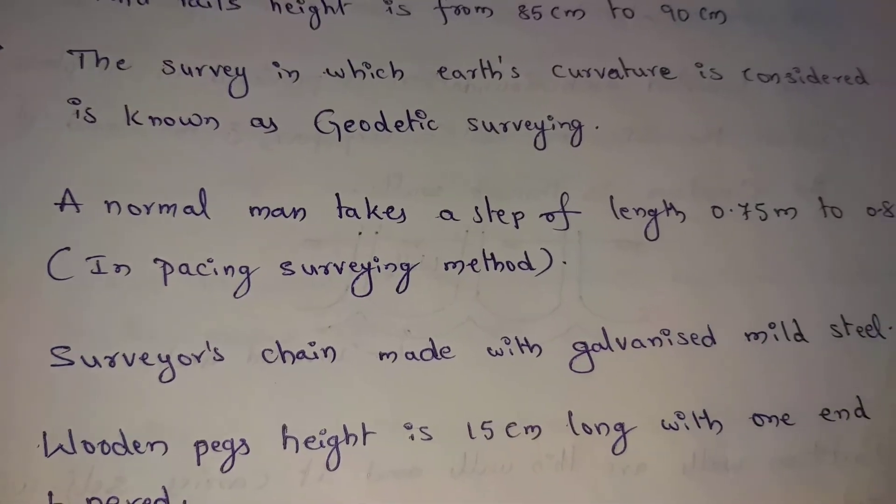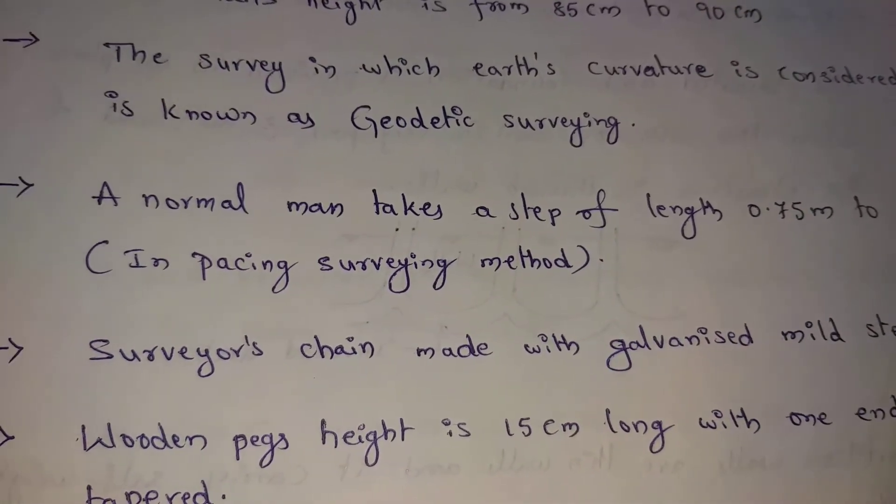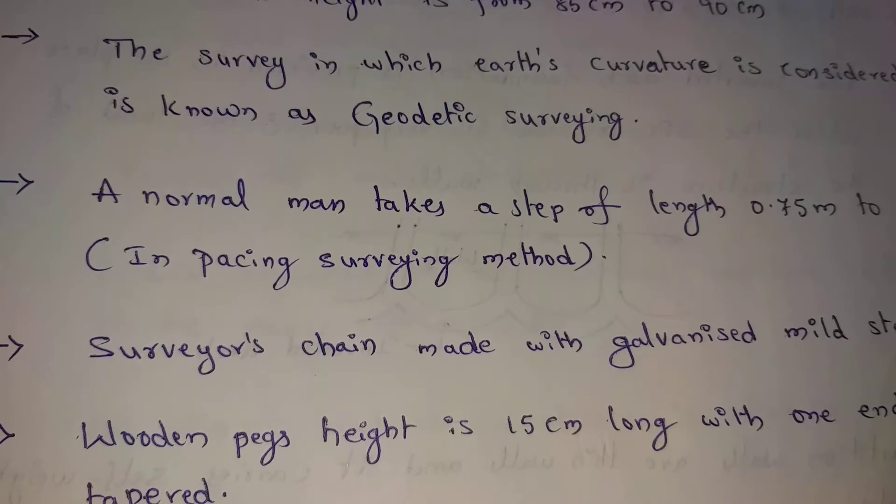Surveyor's chain made with galvanized mild steel. Chains have different types like revenue chain, surveyor chain, engineering chain, gunter chain. Different chains, maximum galvanized mild steel prepared made.